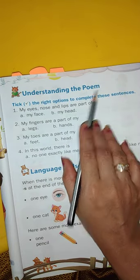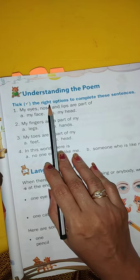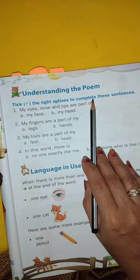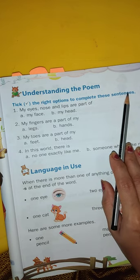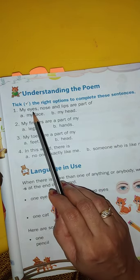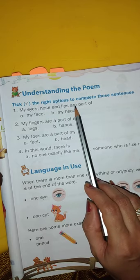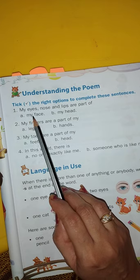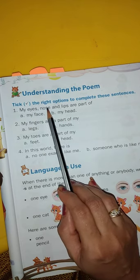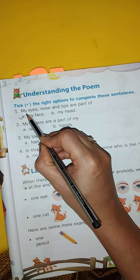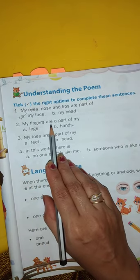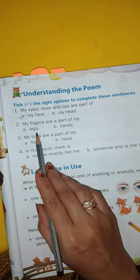Now you have to solve the textbook. Understanding the poem: take the right option to complete these sentences. My eyes, nose, and lips are part of my face. Head, eyes, nose, lips are parts of our face — so put a tick mark here. My fingers are a part of my legs or hand?